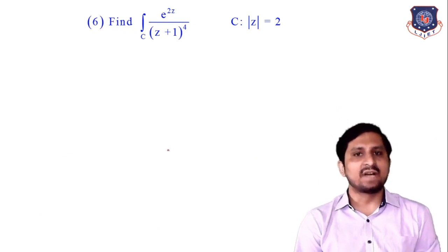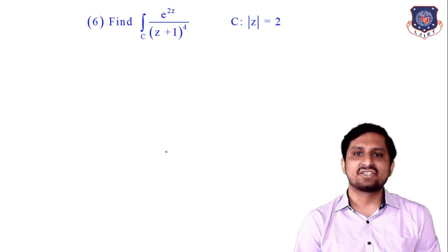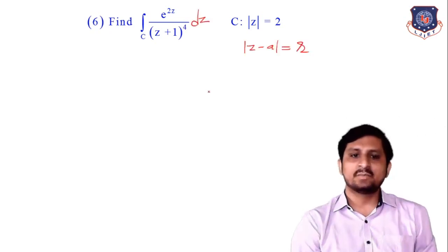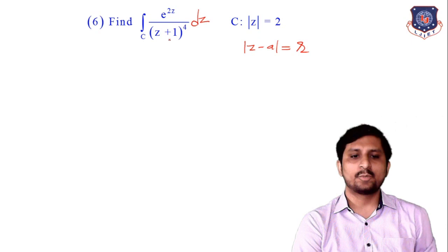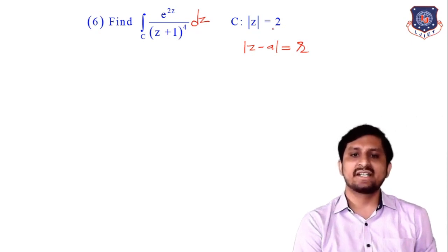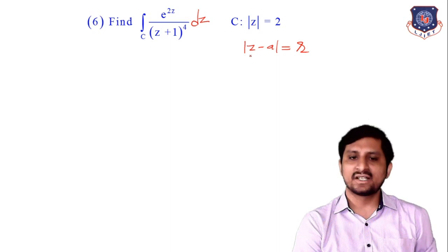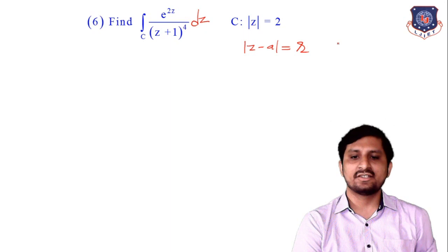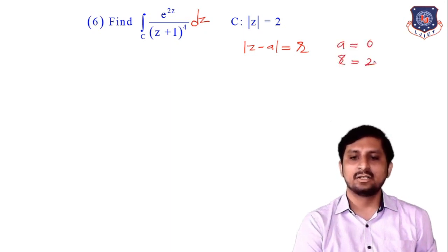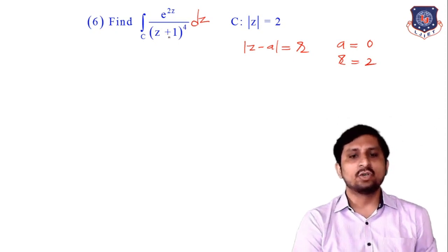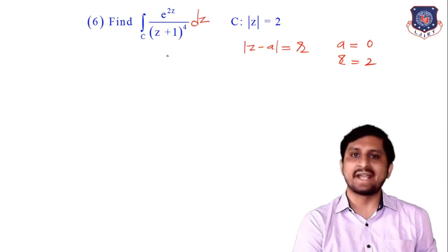Up to example 5 we already solved in the last lecture. This is our example number 6: integration of e^(2z) upon (z+1)^4 dz, where the circle is |z| = 2. When we compare this circle with the general equation mod(z minus a) = r, in that case a is 0 and r is 2. This whole function is not analytic at z = −1.